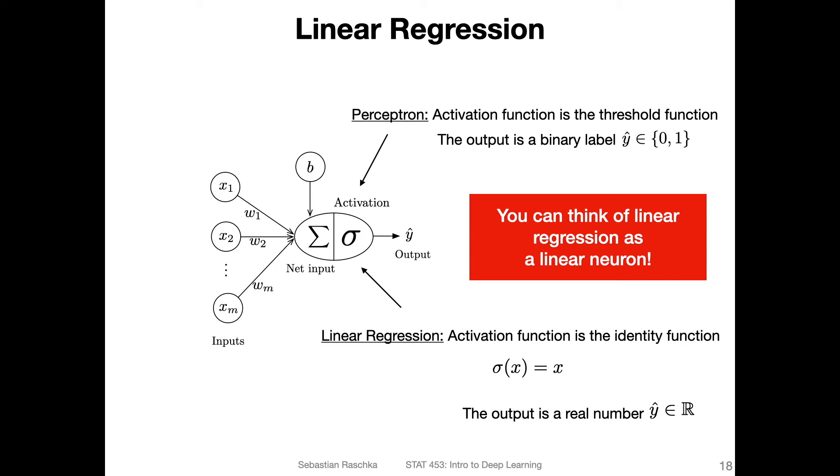In that way, you can think of linear regression as a linear neuron, a single layer neural network.